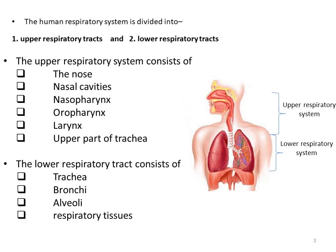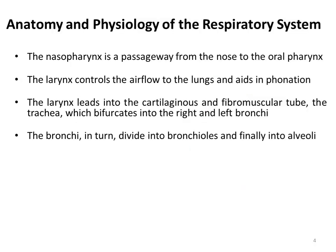The upper respiratory system consists of the nose, nasal cavities, nasopharynx, oropharynx, larynx and upper part of trachea. The lower respiratory system consists of the trachea, bronchi, alveoli and respiratory tissues.